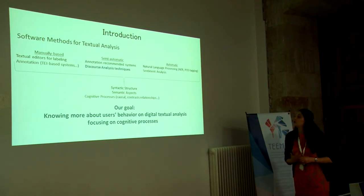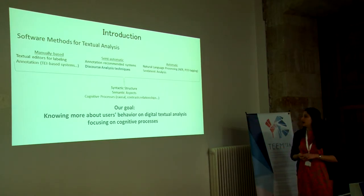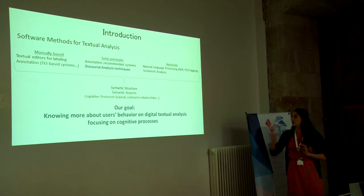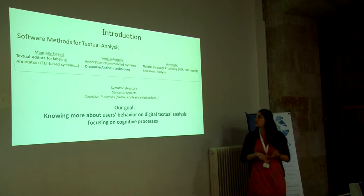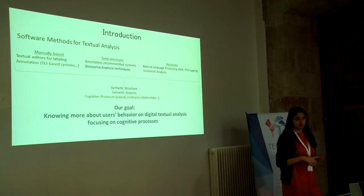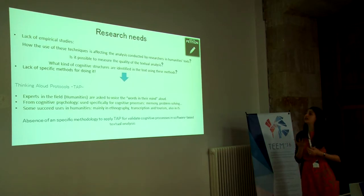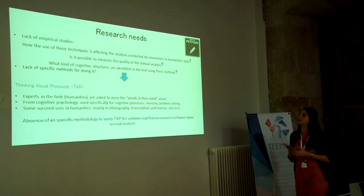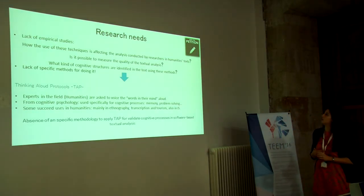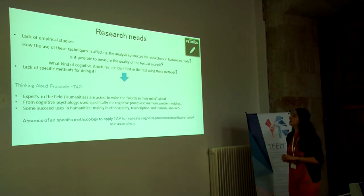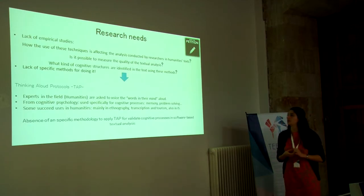We want to know more about how our users analyze text in a digital context, focusing on structural things, causal relationships, constructs, etc. We find that there is a lack of empirical studies to know what happens here — how the use of these techniques affects the analysis conducted by researchers in humanities text, and whether it is possible to measure the quality of the analysis or identify cognitive structures using these methods.